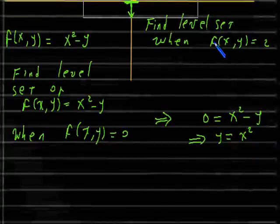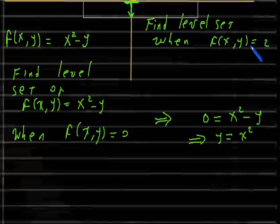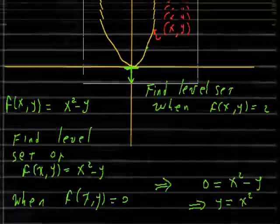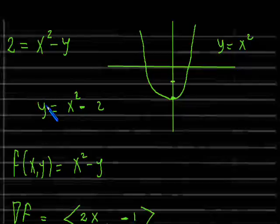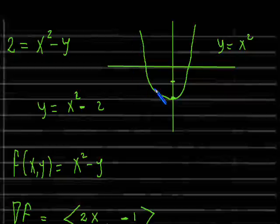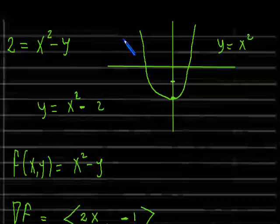So there it is. Let's see what happens with the level set when we set f(x, y) = 2. Well, when f(x, y) = 2, the level set gives us 2 = x² − y. Writing this as y = x² − 2 using elementary algebra, we actually end up with the initial graph moved down by two units.